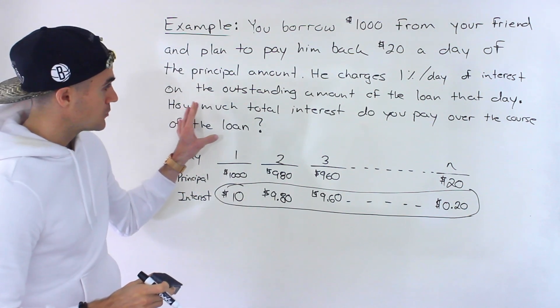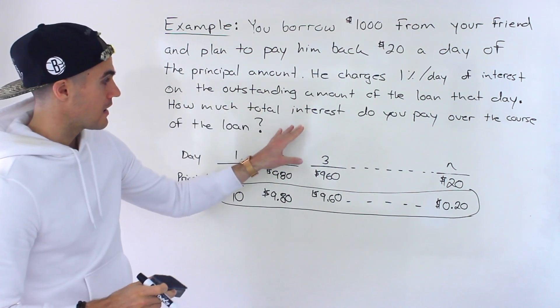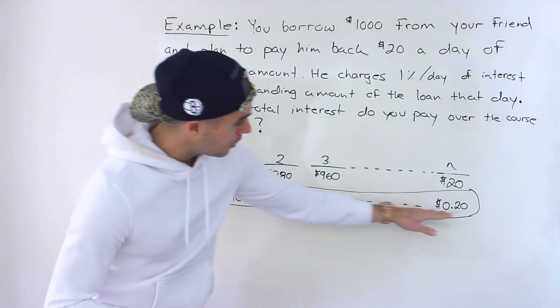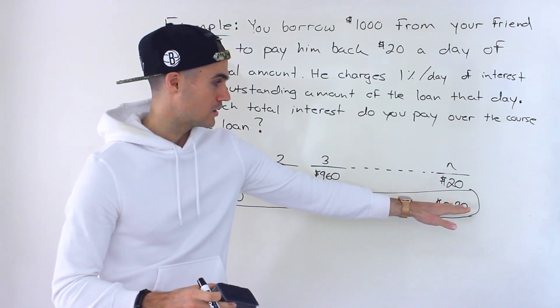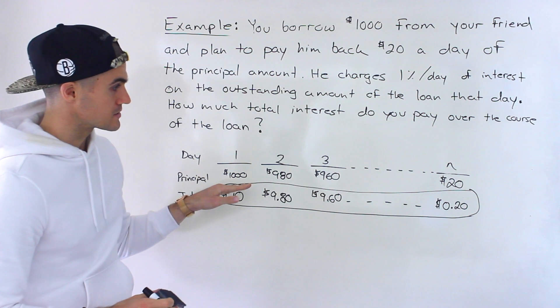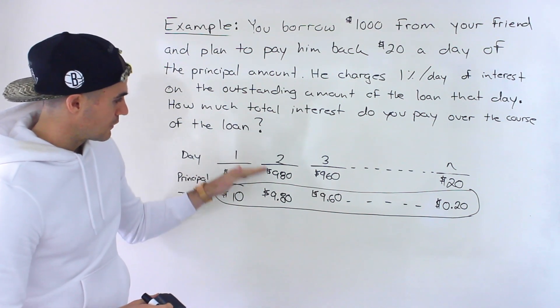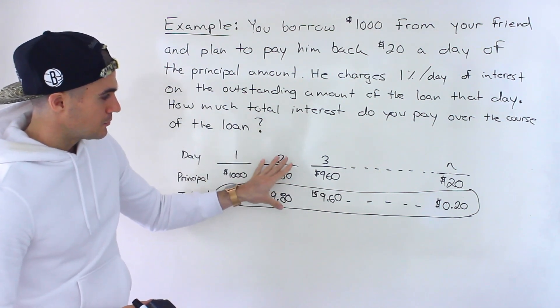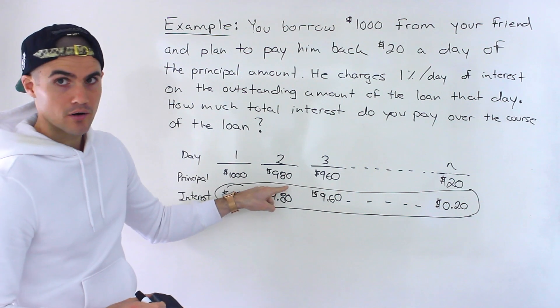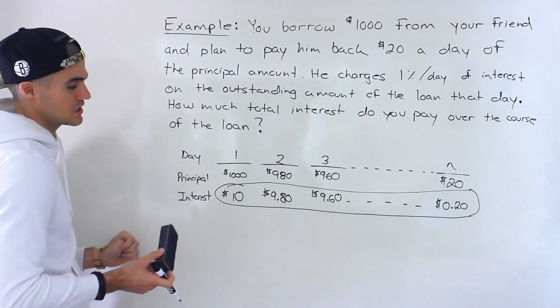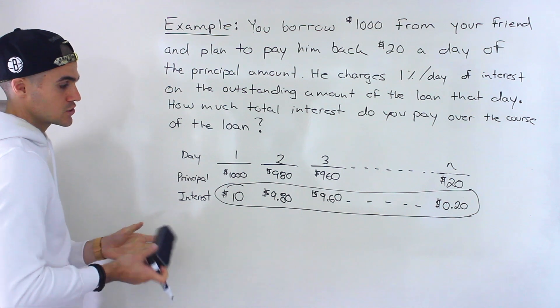So when they're asking how much total interest do you pay over the course of the loan, you have to sum up all of these values over here, all these interest payments. It's just figuring out what they're going to be, setting it up like this. I feel like this is the toughest part because from here, it's just a basic sequence and series question.